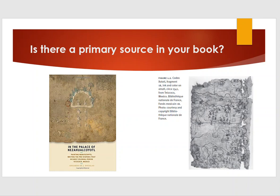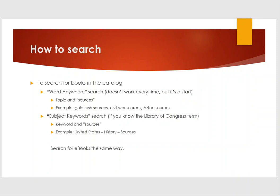For example, when looking through this book on Aztec culture, I found a photo of a codex fragment — this is a primary source. One of the easiest ways to search the catalog is to go to Word Anywhere and type in the topic and add the word 'sources.' For example, Gold Rush sources, or Civil War sources, or Aztec sources. This won't work for everything, but it's a quick and easy way to search.